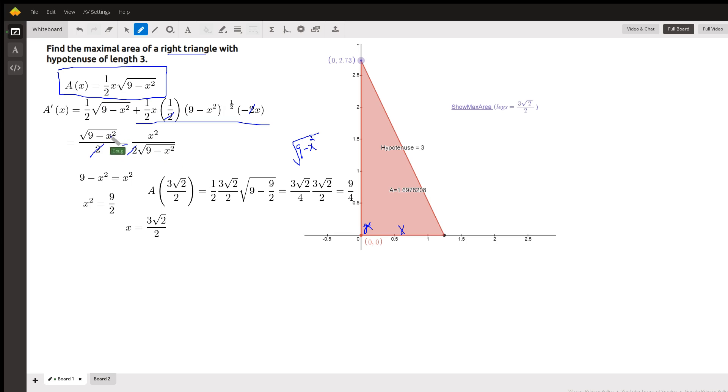Then you get radical times radical gives you what's under the radicand. Nine minus X squared equals X squared. X squared equals nine halves. So X equals plus or minus the square root of nine halves.